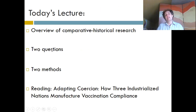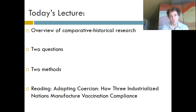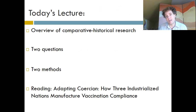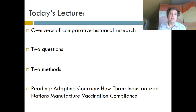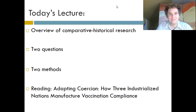So that's essentially the lesson for today. It gives you an overview of comparative historical research, allows you to understand how it's different from both history and other methods within sociology, and covers the two methods — the comparative method and path dependency. And that's it for today's lesson.